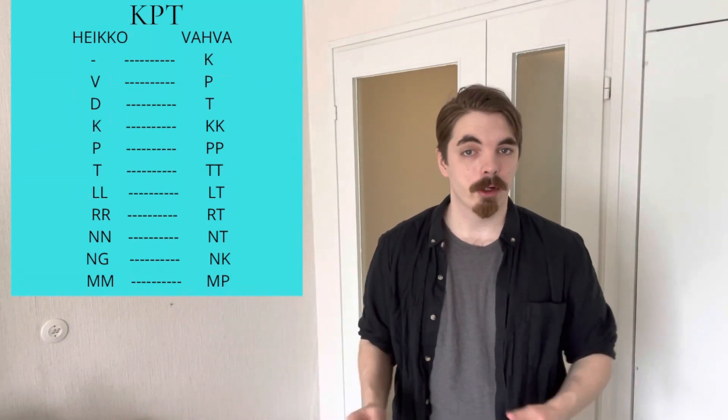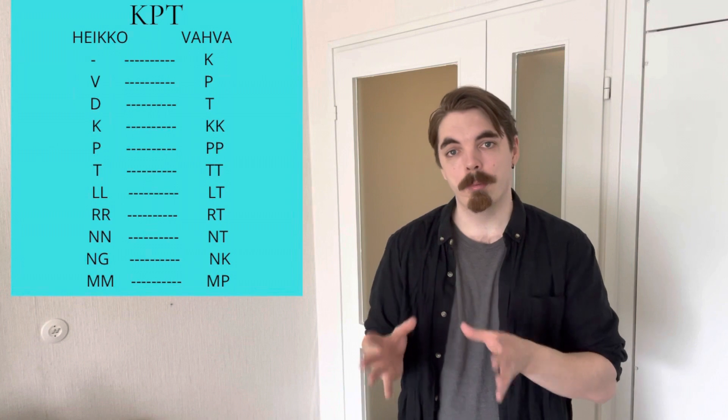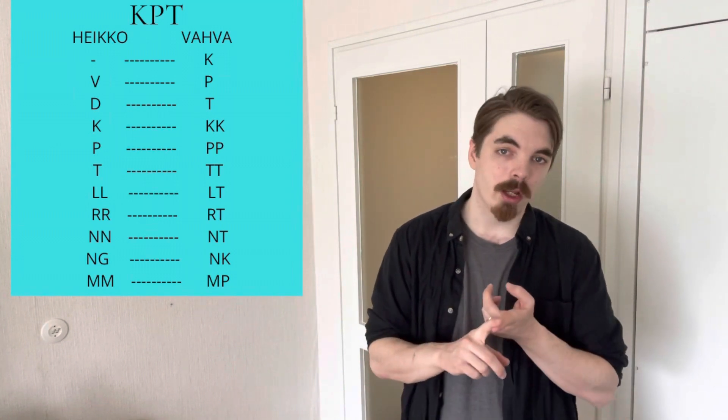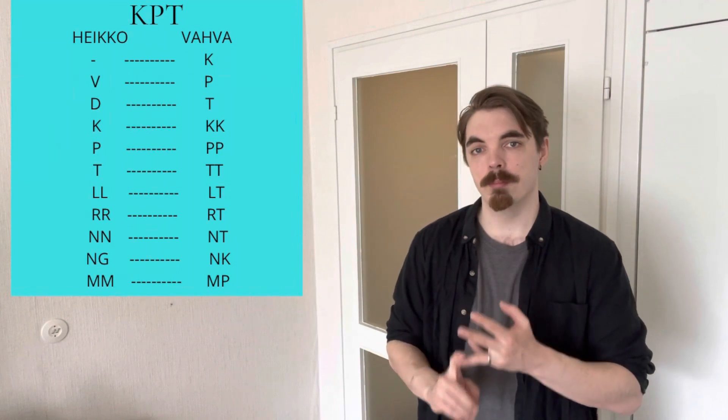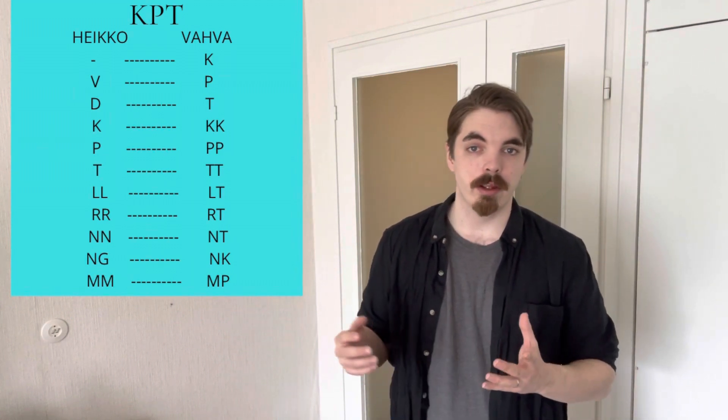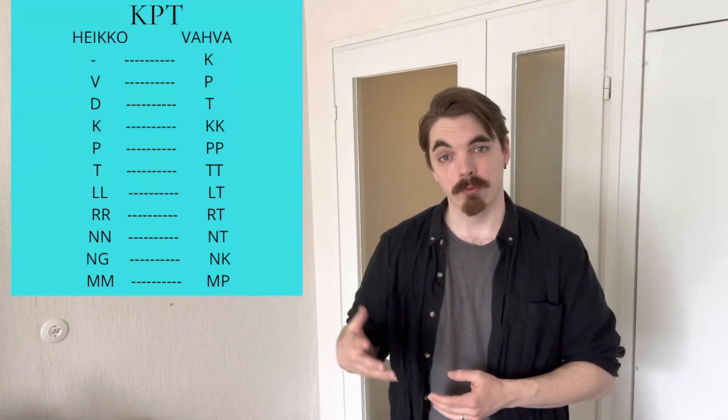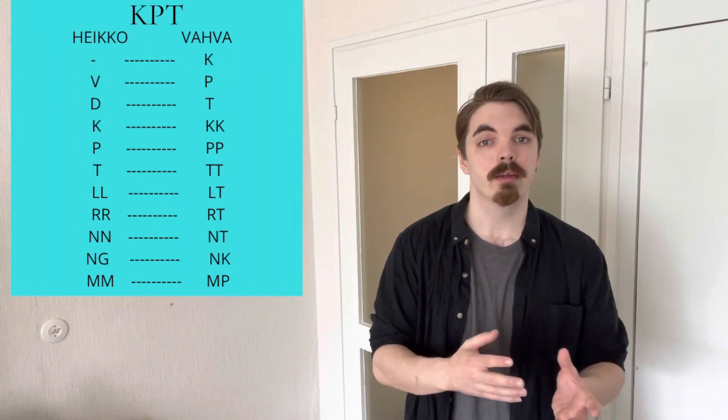A quick recap: in verb type 1, we change strong to weak, however HAN and HE remain strong. In verb types 3, 4, and also 6, we change weak to strong. Have a go with the verbs I've given you and see how you get on. Comment if you have any questions or if I didn't explain something particularly well, and subscribe to the channel — there'll be a lot more videos coming soon. Thank you and goodbye.